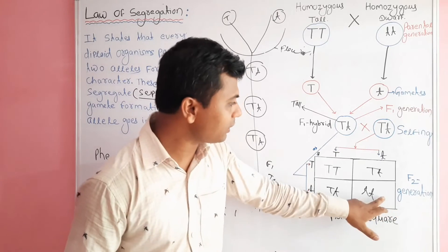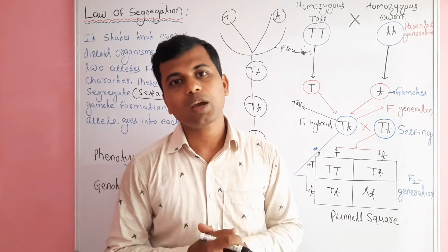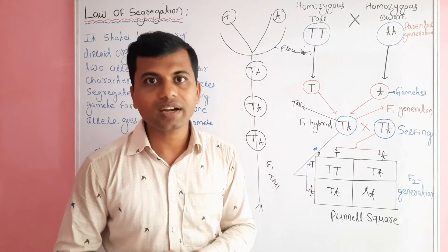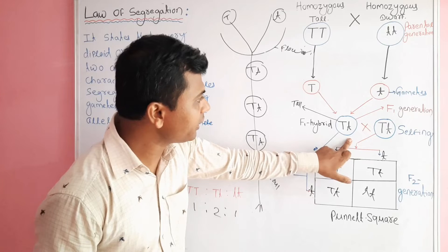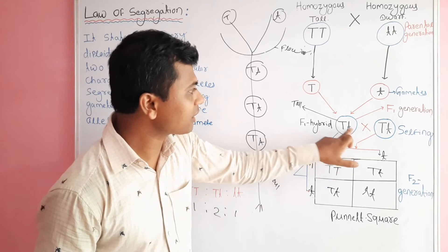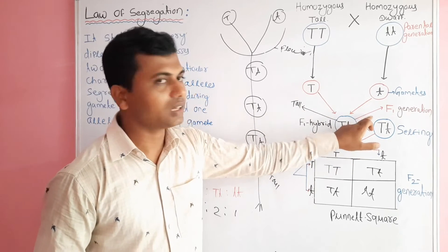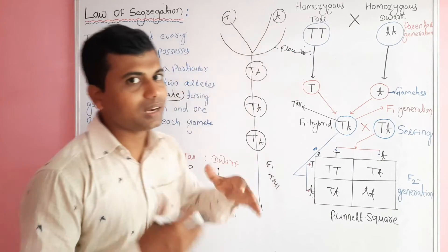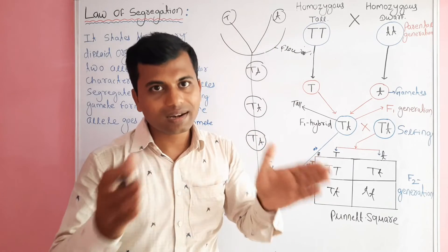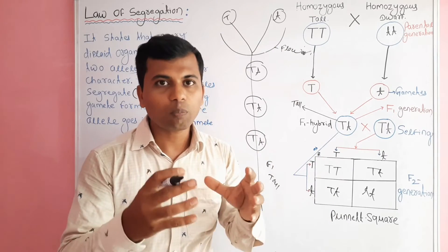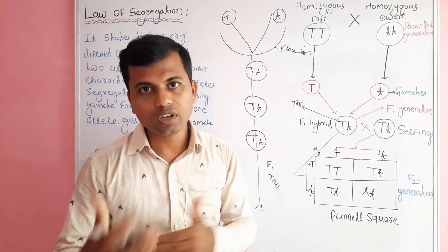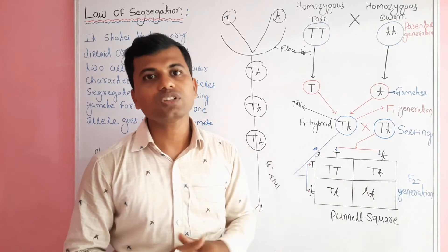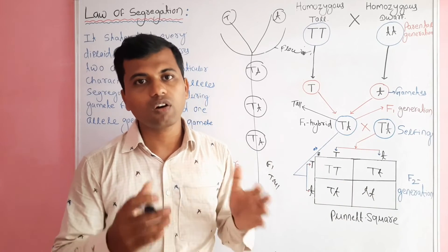The appearance of homozygous dwarf plants in the F2 generation helped Mendel conclude that the F1 plants could never be homozygous. Instead, they should be heterozygous, containing different alleles for height — capital T as the dominant allele and small t as the recessive allele. During gamete formation, the dominant allele capital T and recessive allele small t separate from one another, and during fertilization they combine at random. This random gametic union causes formation of the recessive dwarf in the F2 generation. This is the basis of the law of segregation.